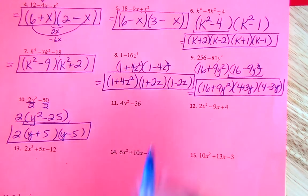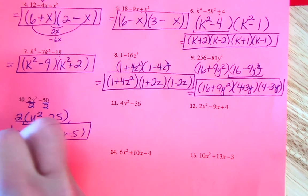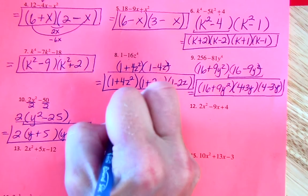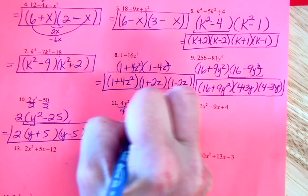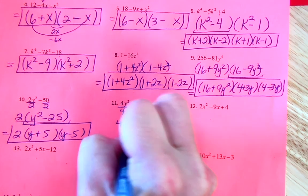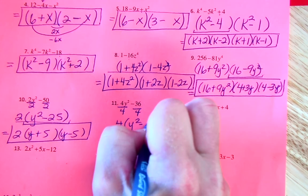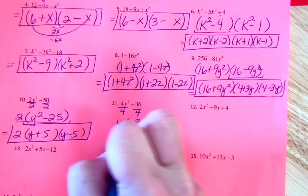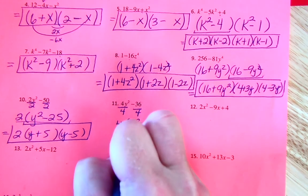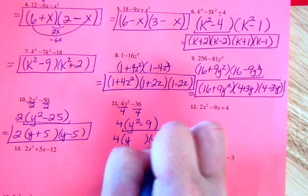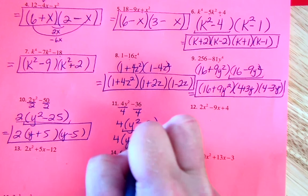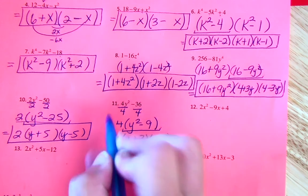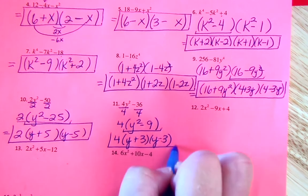The greatest common factor in number 11 is 4, so it's 4 times (y² − 9). That's DOTS — 9 is a perfect square — so factor again: 4(y + 3)(y − 3).